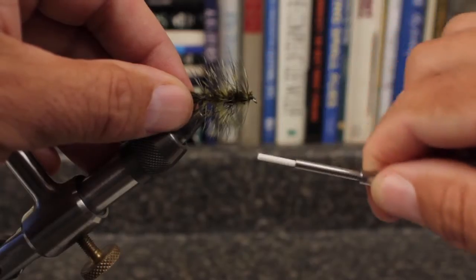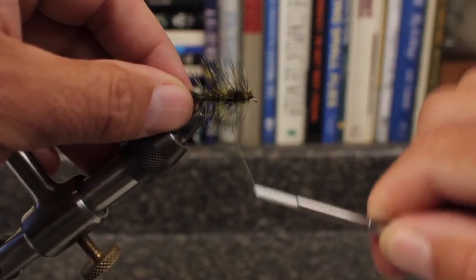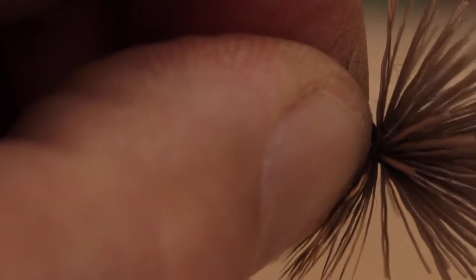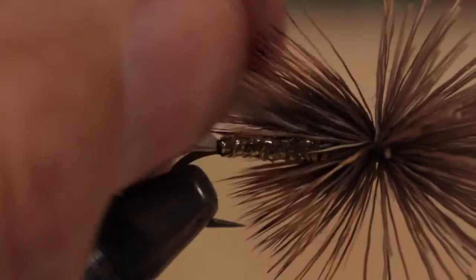This is the bobbin of choice for those who regularly tie streamers and other patterns requiring longer hooks. It has also become a favorite among tyers who spin deer hair and need a good bit of thread tension as well as finesse.